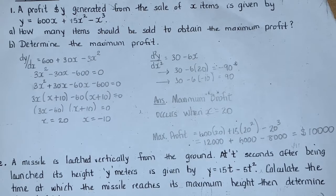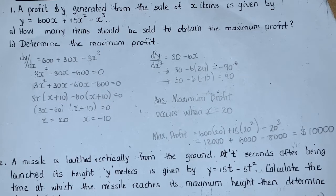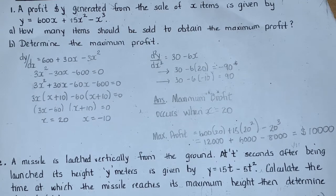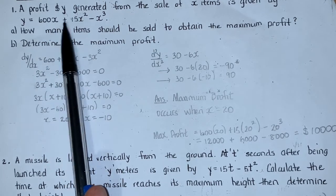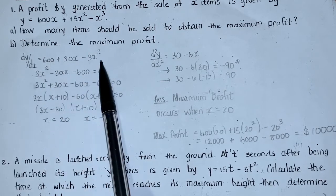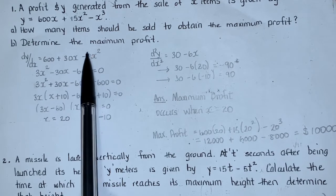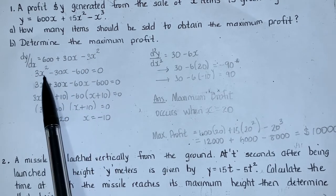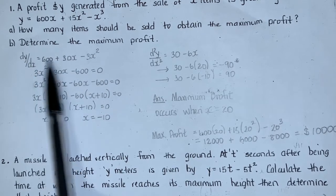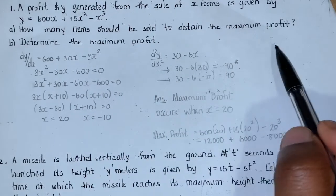For our first question, it says a profit Y dollars generated from the sale of X items is given by that function. Part A: how many items should be sold to obtain the maximum profit? Here we have our Y function, and if we differentiate it, we get dy/dx equals 600 plus 30X minus 3X squared. We will equate that gradient function to 0 to find the maximum. I rearranged it into the form AX squared plus BX plus C, bringing terms over to get 3X squared minus 30X minus 600 equals 0. When we solve this quadratic, 3 times negative 600 is negative 1800.